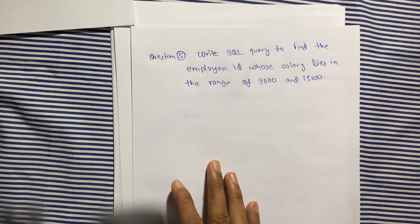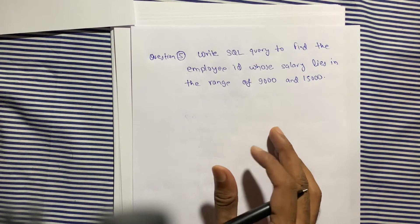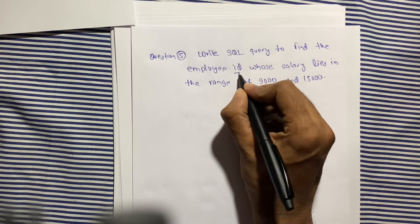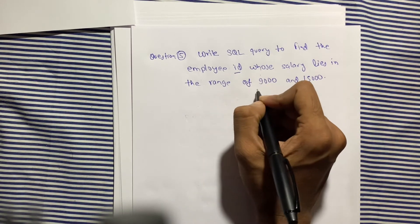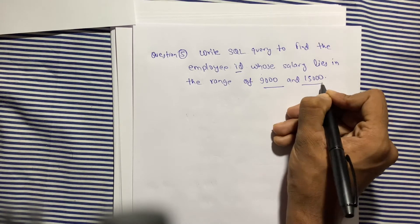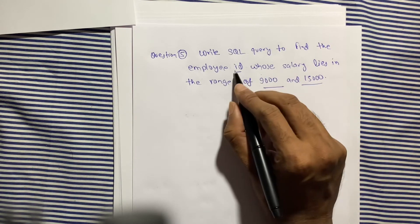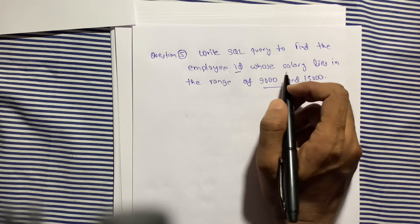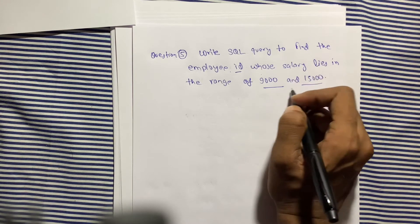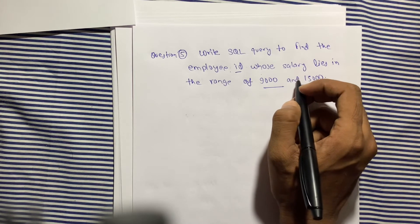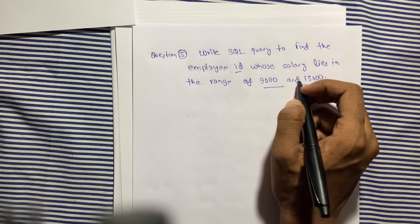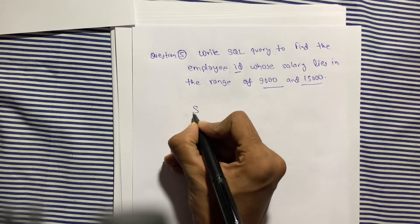The fifth question: write a query to find the employee ID whose salary lies in the range of 9000 to 15000. We have to find the employee ID of those employees whose salary falls between this range. We can use the BETWEEN operator with a WHERE clause.